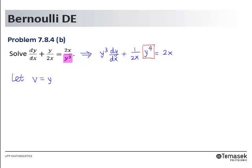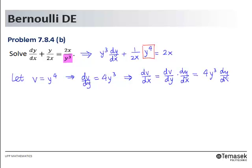So let v equals y to the power 4 and dv/dy will be 4y cube. This implies that dv/dx equals dv/dy times dy/dx, which will be 4y cube dy/dx.